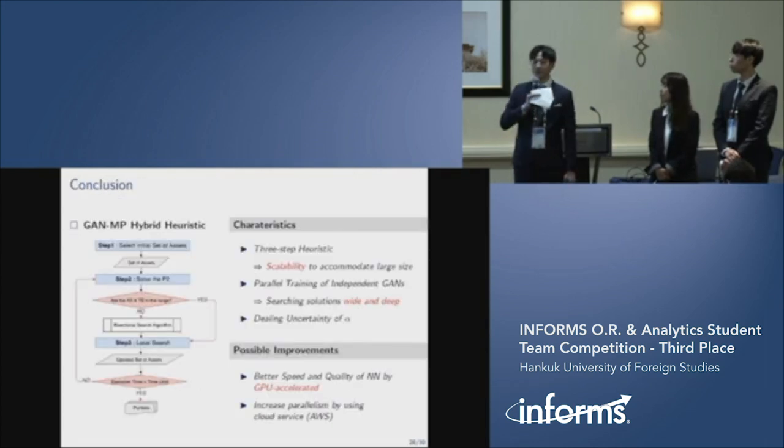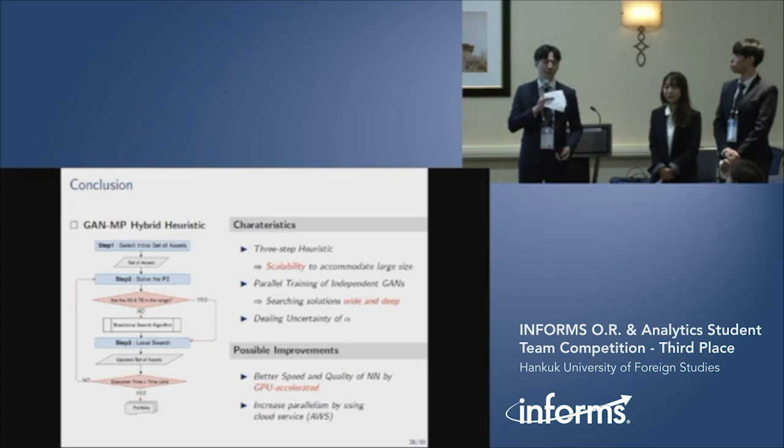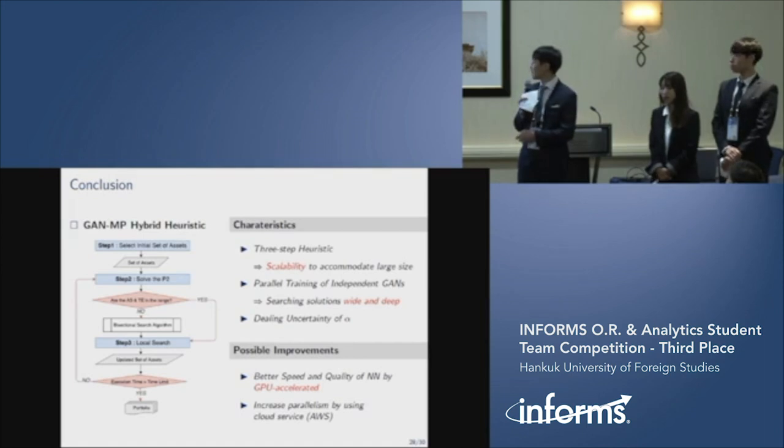In conclusion, we propose the GAN-MP hybrid heuristic method for non-convex portfolio optimization. Our algorithm has three characteristics. First, the structure has scalability to accommodate large size problems. Second, parallel training of GANs searches solution wide and deep. And the last, it also considers uncertainty of expected return. We highly recommend to principal that GPU-based training and increasing parallelism will give better speed and quality.